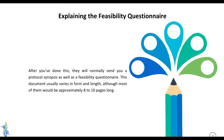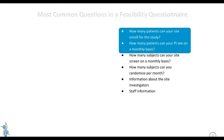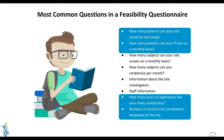So after they send you the CDA and it's been signed and executed, they'll send you a protocol synopsis, which will cover what the study is going to do, what they're going to study, what kind of patients they're looking for, and they'll include a feasibility questionnaire for you. Typically this is about 8 to 10 pages long. In the next few slides, we'll go over the most common questions in a feasibility questionnaire.